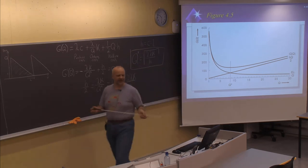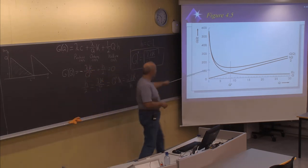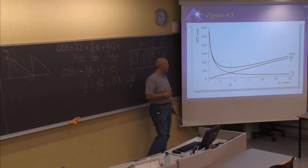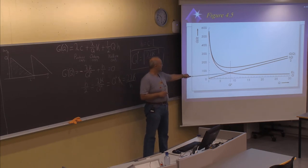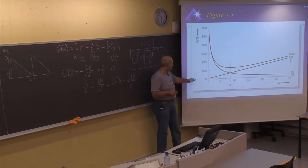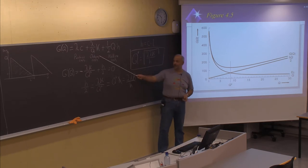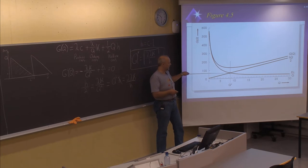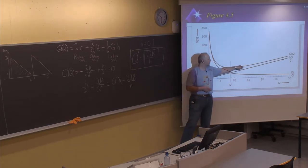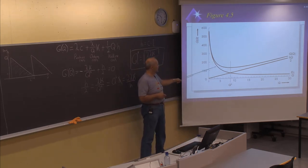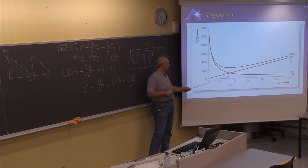At the optimal Q*, something quite interesting occurs: the two cost factors — ordering cost and holding cost — are exactly equal. The upper curve is the sum of both relevant cost factors. At the minimum point, these two are the same. If Q is higher, the holding cost dominates; if Q is lower, the ordering cost dominates. But at this optimal point, they are exactly at the same level.